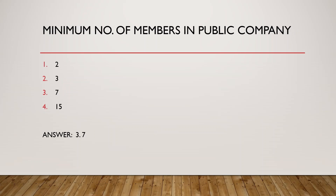Question: Minimum number of members in a public company. In a public company, the minimum members required is seven and the maximum is unlimited. For a private company, the minimum is two and the maximum is 200. Since the question asks for the public company's minimum members, the answer is seven.